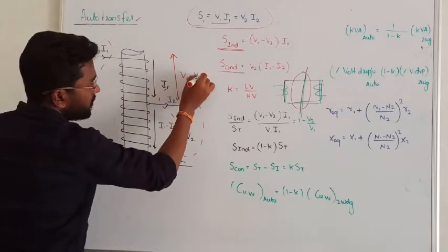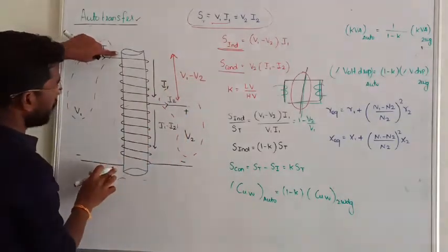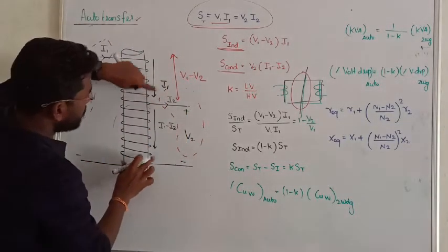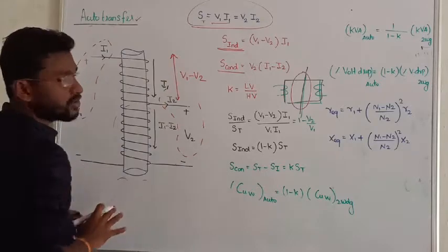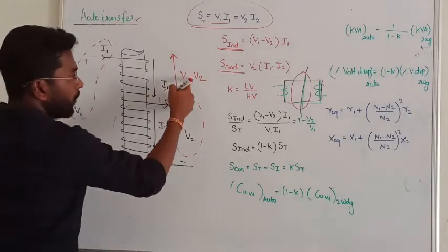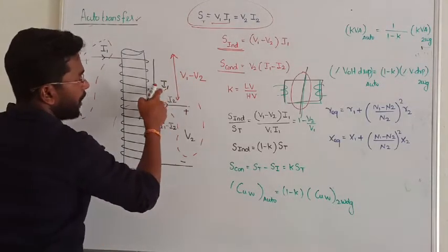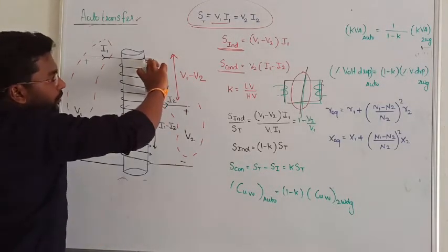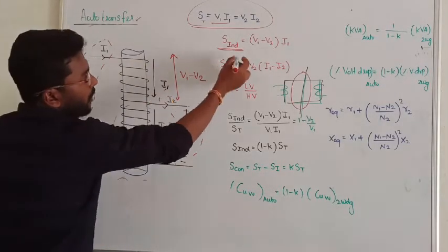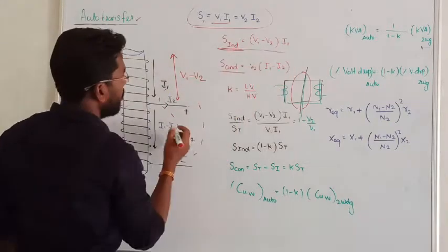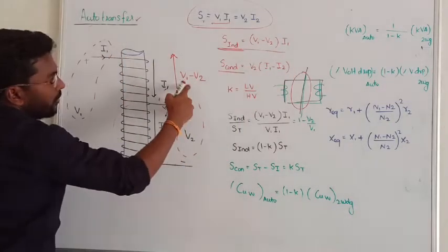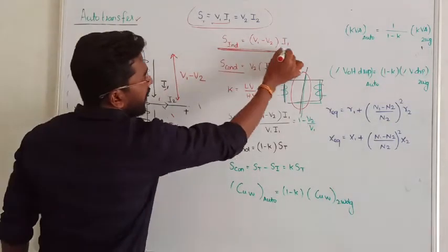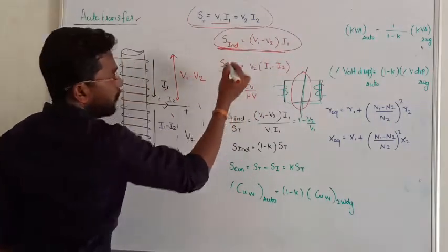In the inductive zone, the voltage is V1 minus V2. The total applied voltage is V1, the secondary voltage is V2, so the inductive zone carries a voltage of V1 minus V2. Therefore, the inductively transferred power equals (V1 minus V2) multiplied by I1.